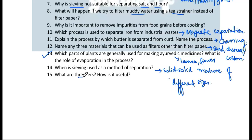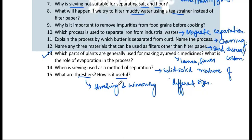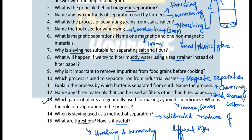Bonus question: What are threshers and how are they useful? Threshers are mechanical machines used for both threshing and winnowing. They are useful because both threshing and winnowing can be done together, so you don't need to do them separately. Please like my video, subscribe to my channel, and share as much as possible. Thank you so much.